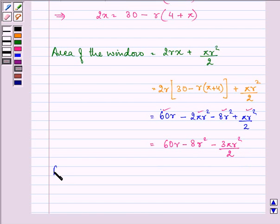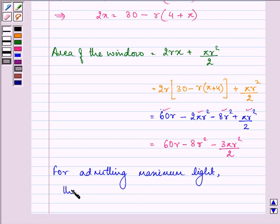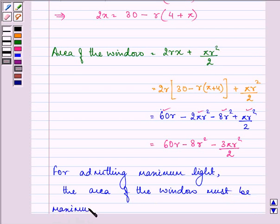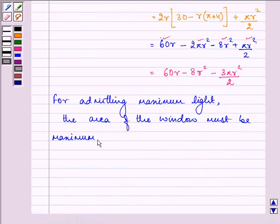Now, for admitting maximum light, the area of the window must be maximum.